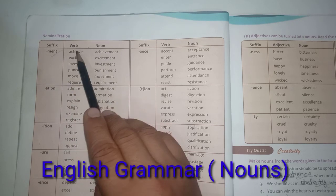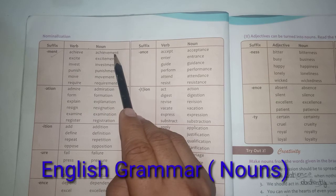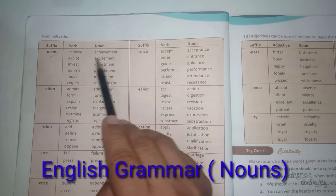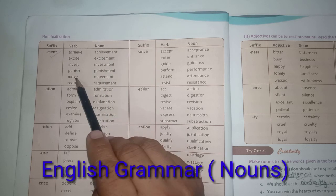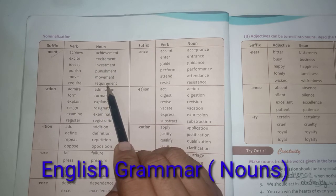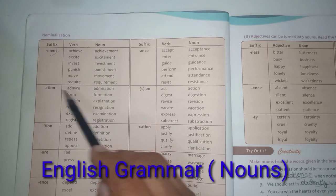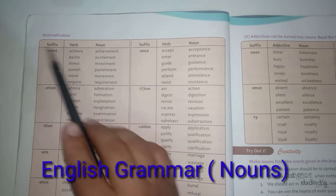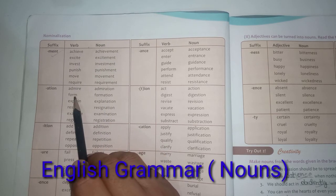First, adding the suffix -ment to verbs: achieve → achievement, excite → excitement, invest → investment, punish → punishment, move → movement, require → requirement. Next, adding -tion as a suffix: admire → admiration, form → formation, explain → explanation, resign → resignation, examine → examination, register → registration.